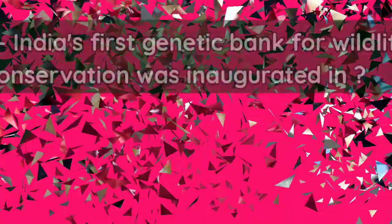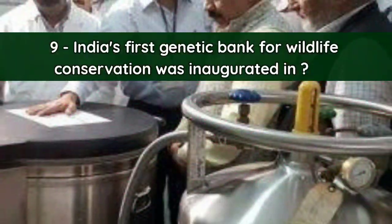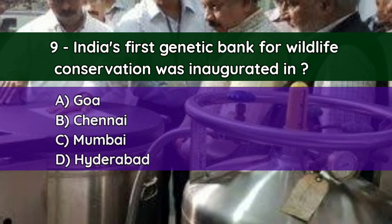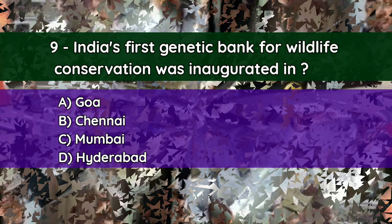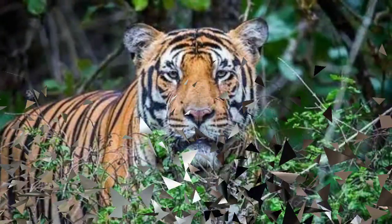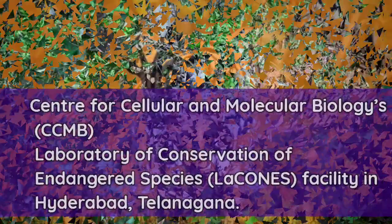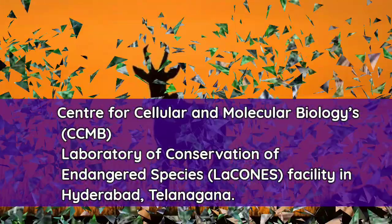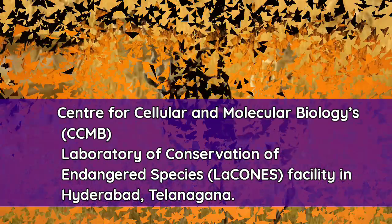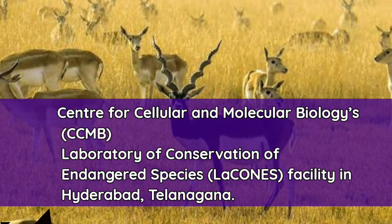Question number nine: India's first genetic bank for wildlife conservation was inaugurated in — A. Goa, B. Chennai, C. Mumbai, D. Hyderabad. And the correct answer is D — Hyderabad. The National Wildlife Genetic Resource Bank was inaugurated at the Centre for Cellular and Molecular Biology's Laboratory of Conservation of Endangered Species facility in Hyderabad, Telangana.